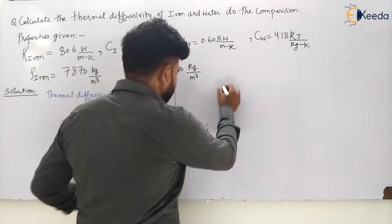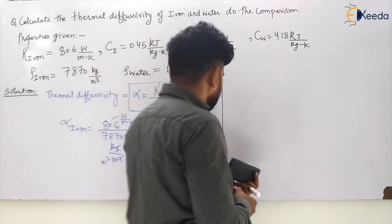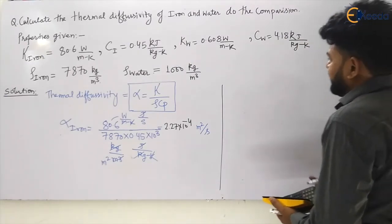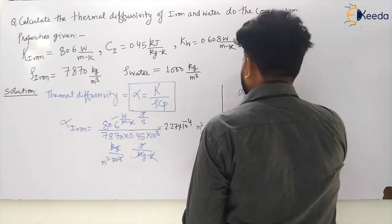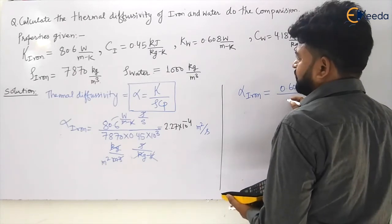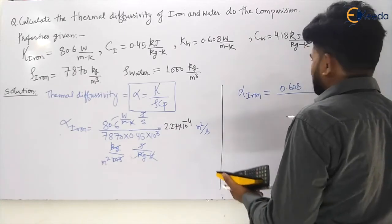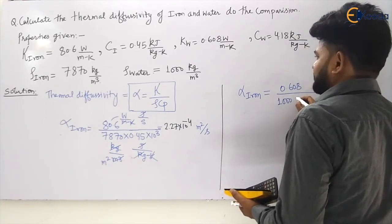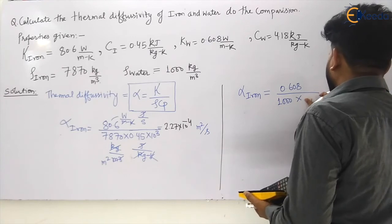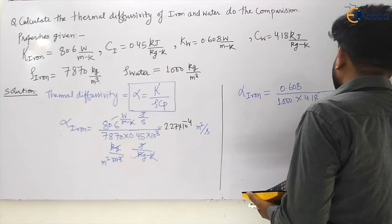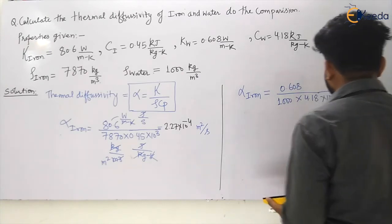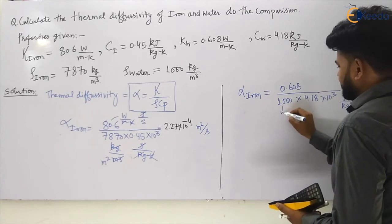Let us calculate for water. So what are the properties for water? We have given you conductivity and specific heat. So alpha water will become k which is 0.6 divided by rho which is 1000 multiplied by cp which is 4.184 into 10 to the power 3. This will be in joule per kg Kelvin, and this is in kg per meter cube.